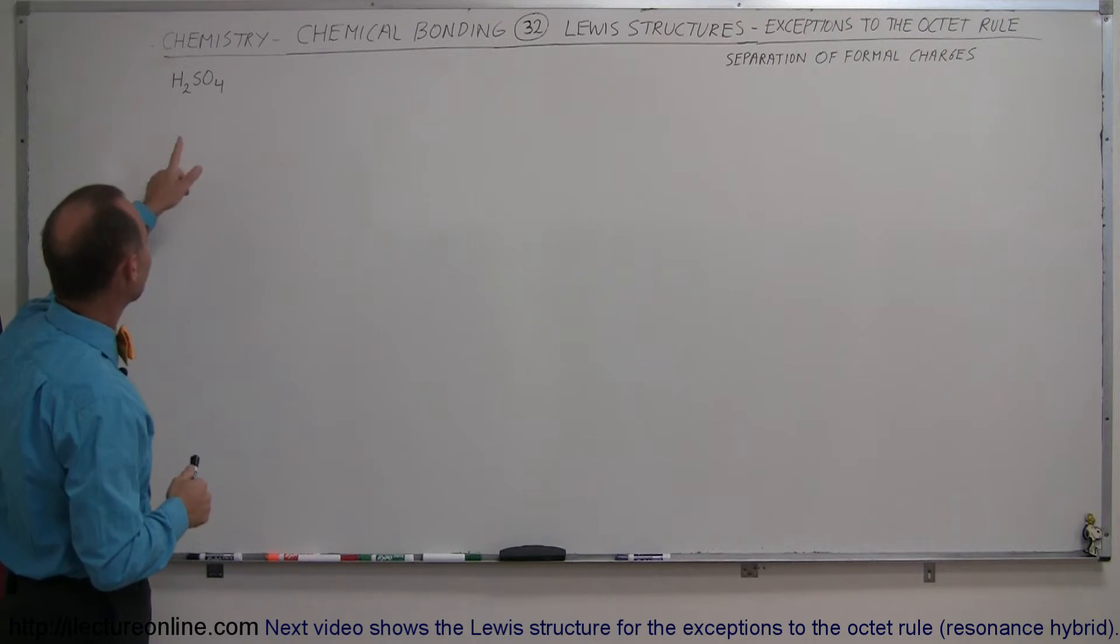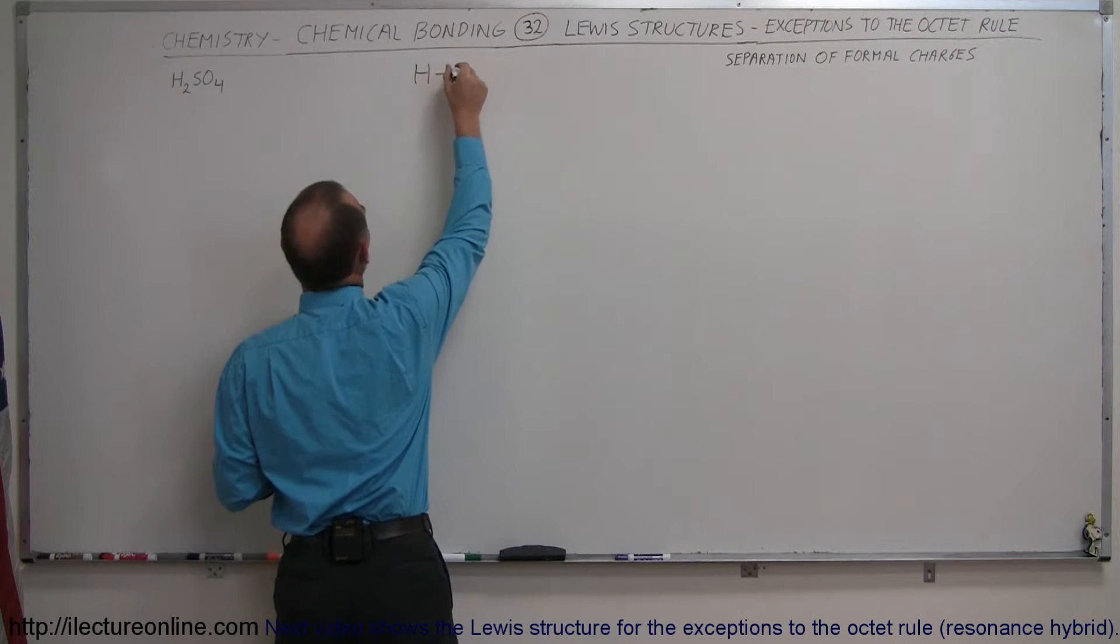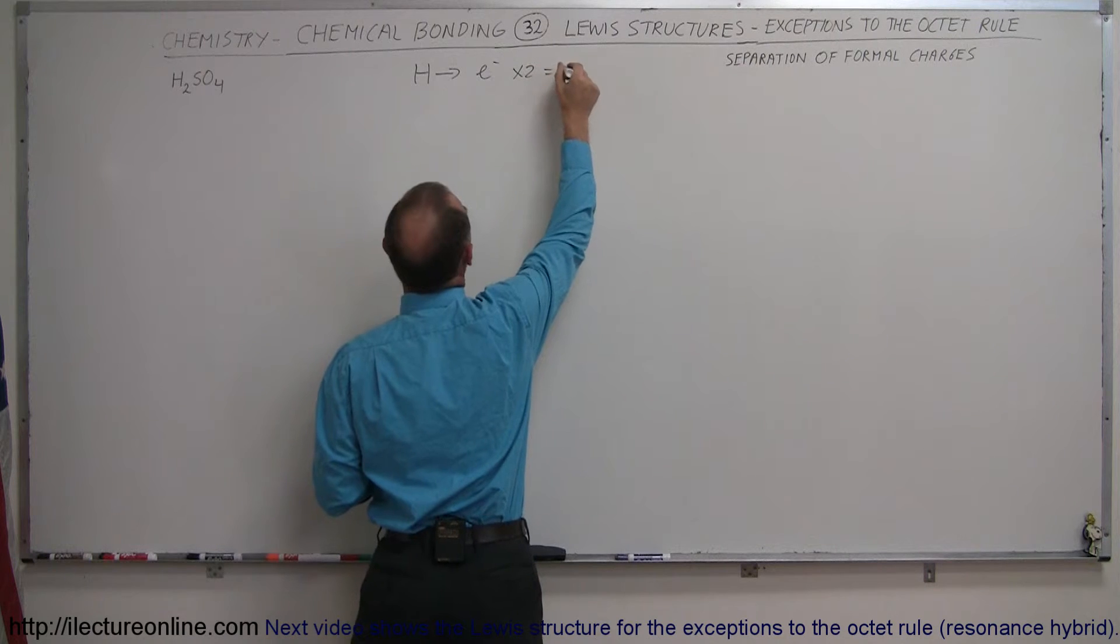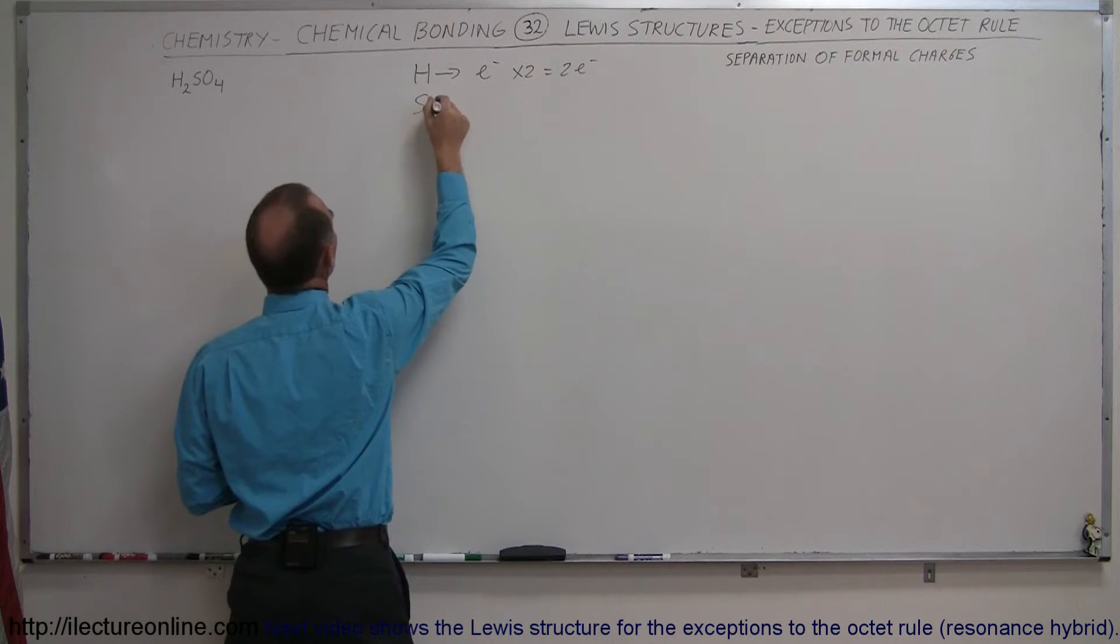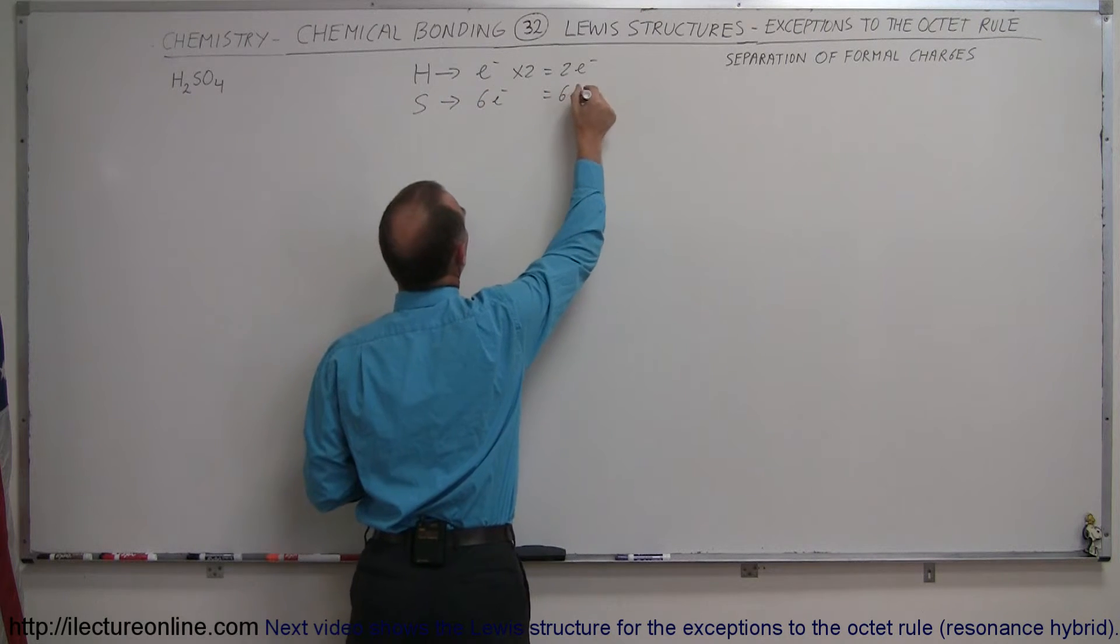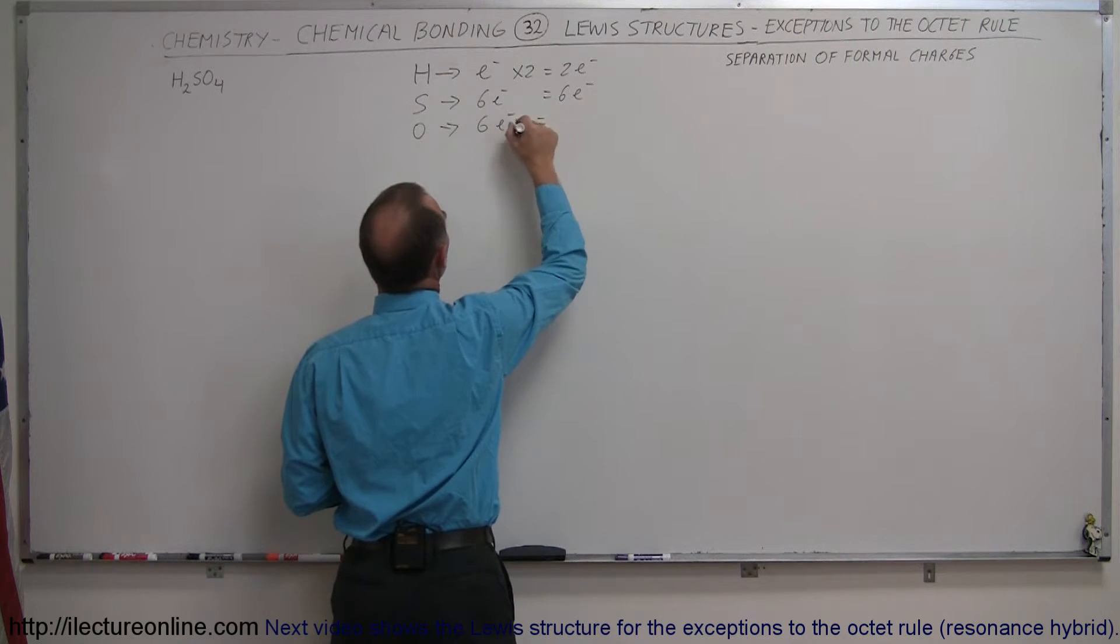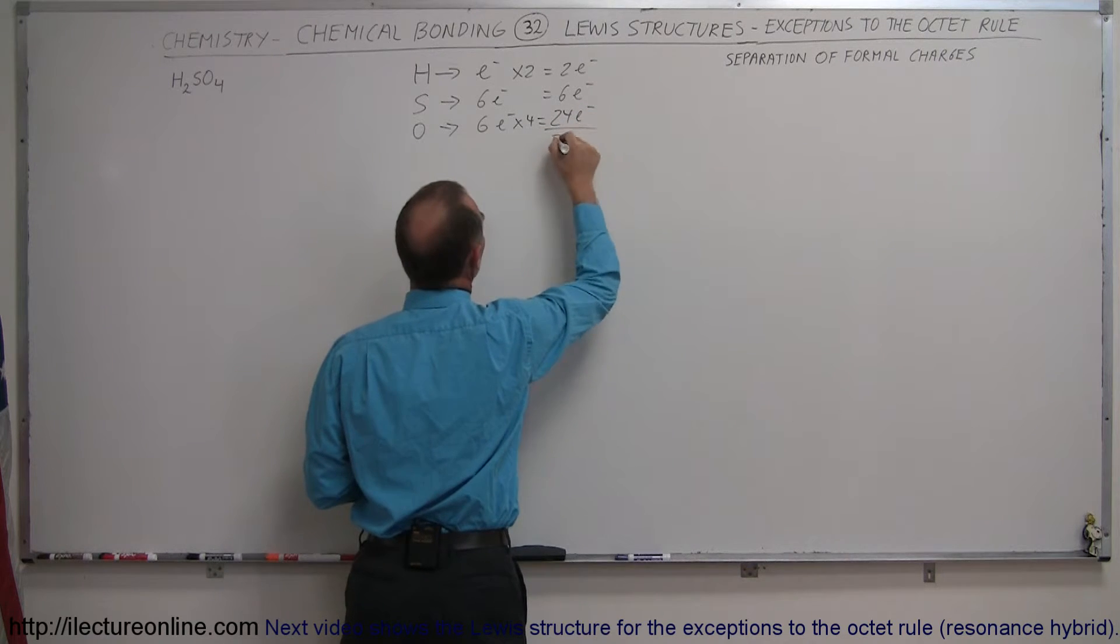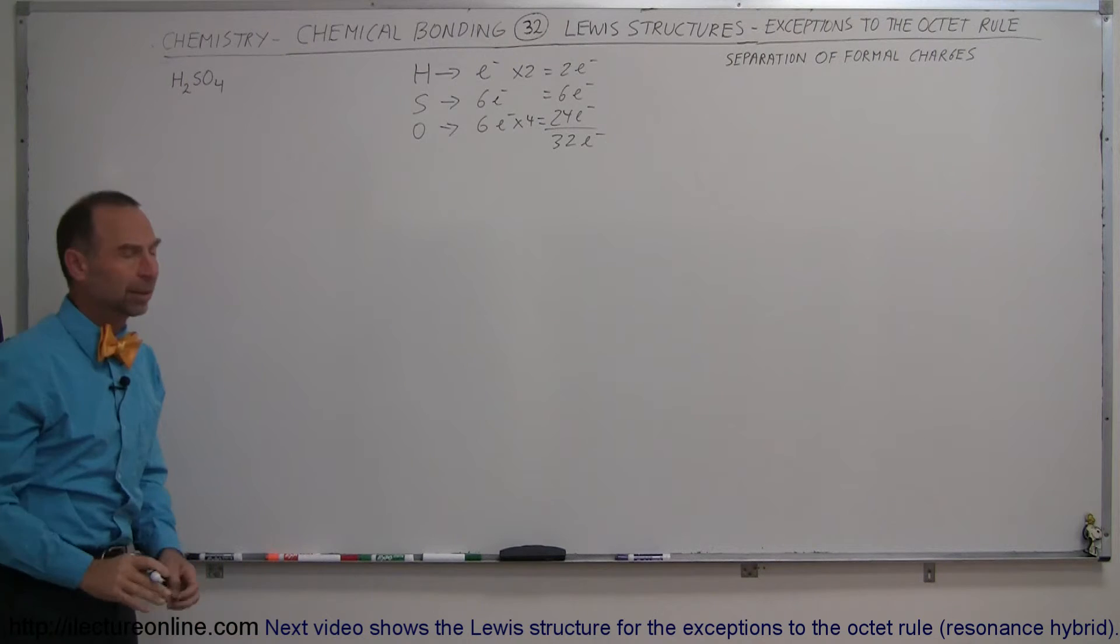First, let's take a look at the molecule itself. We have two hydrogens, so hydrogen has one valence electron and we have two of those, that means we have two valence electrons available for bonding. Sulfur has six valence electrons, so there's only one of those. We have oxygen which also has six valence electrons, and we multiply times four because there's four of them, that's 24 electrons. So a total of 32 electrons are available for bonding in this particular molecule.